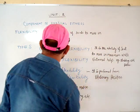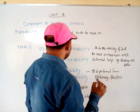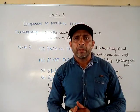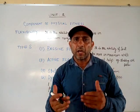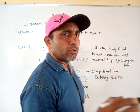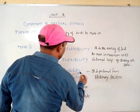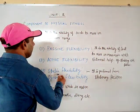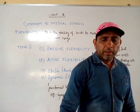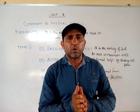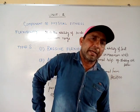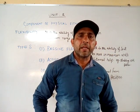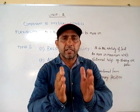The second type is active flexibility. In active flexibility, we don't require external help — we perform ourselves. Active flexibility means we perform stretching ourselves. Active flexibility is further divided into two parts: the first is static flexibility, and the second is dynamic flexibility. Static flexibility is performed from a stationary position — for example, bending side to side, stretching the hip joint, all from a fixed position.